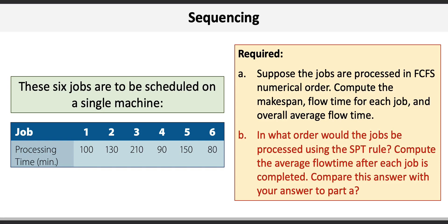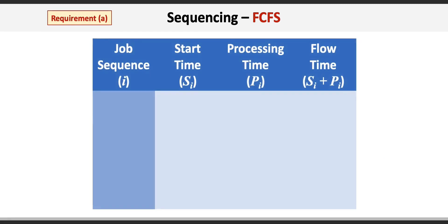Starting with requirement A under the FCFS sequencing rule, it helps to set up a table with columns for the job sequence (i), the start time (Si), processing time (Pi), and flow time, which equals Si plus Pi. Since the jobs are first-come-first-served, we list them in order from 1 to 6.